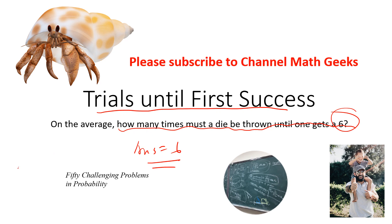Suppose you have a trial where the probability of success is p. Then the average time you need to get one success is 1 over p.